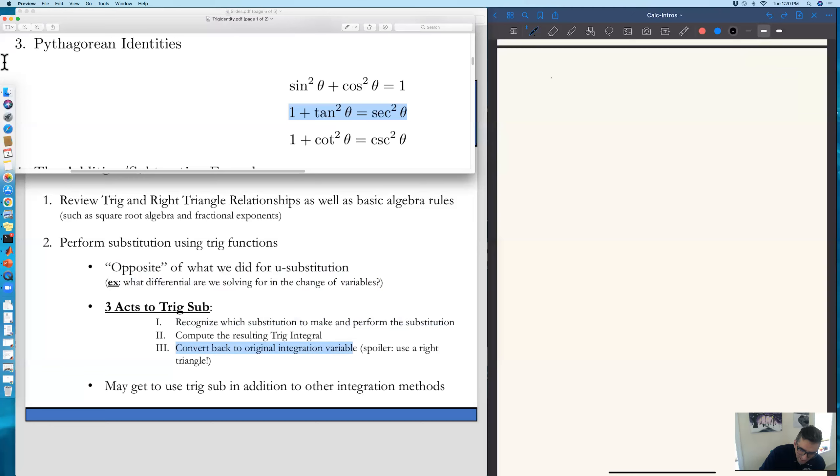We take our first identity, that sine squared plus cosine squared equals one. And what we're actually going to do is just solve for cosine squared. So we have cosine squared of theta equals one minus sine squared of theta.